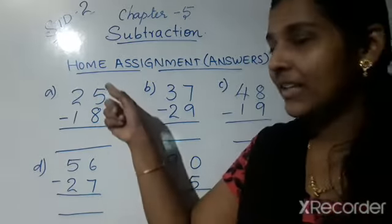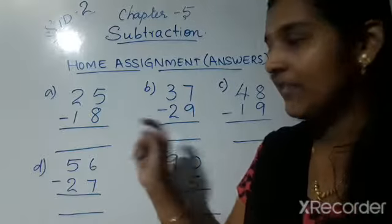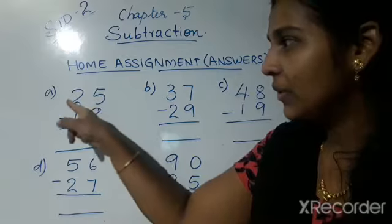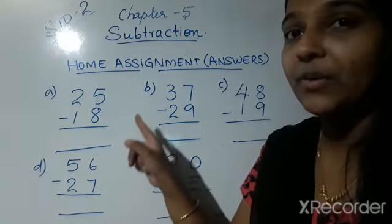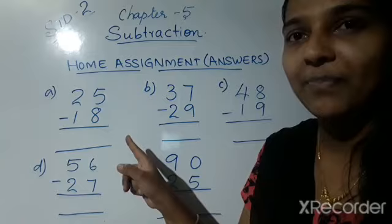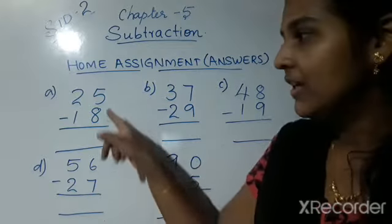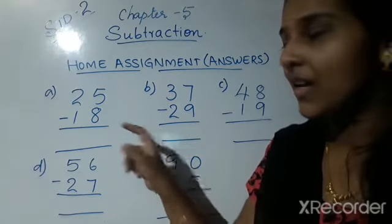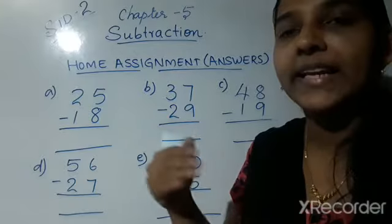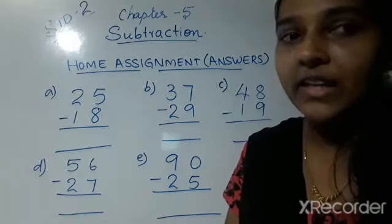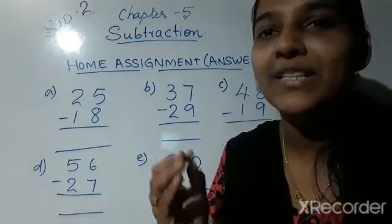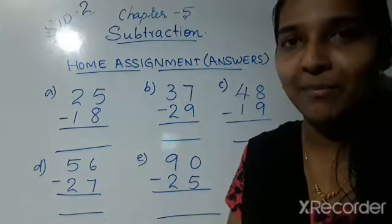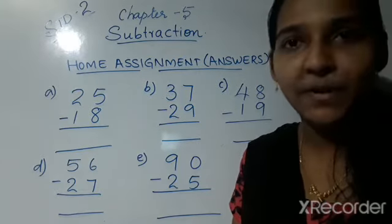Look at the first question: 25 minus 18. 25 and 18 are both two-digit numbers. We have to start the subtraction from the ones place digit. Here the ones place digits are 5 and 8. 5 is a small number and 8 is a bigger number — we cannot subtract a bigger number from a smaller number. So we have to regroup these numbers, and after that we can do the subtraction.